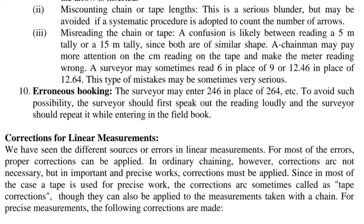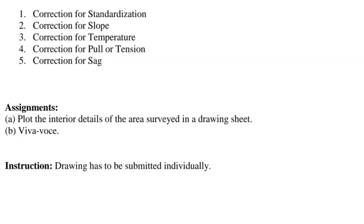Corrections for linear measurements: For most errors, proper corrections can be applied. In ordinary chaining, corrections are not necessary, but in important and precise works they must be applied. Since a tape is used for precise work, these are sometimes called tape corrections, though they can also be applied to chain measurements. For precise measurement, the following corrections are made: 1. Correction for standardization. 2. Correction for slope. 3. Correction for temperature. 4. Correction for pull or tension. 5. Correction for sag.